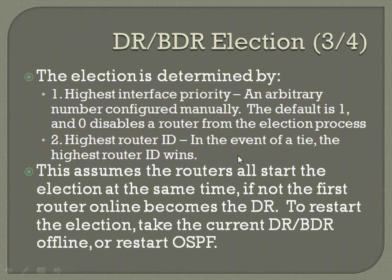This assumes that routers all start the election at the same time. If not, the first router online becomes the designated router. So if you turn on one and then wait 30 seconds and turn on all the others, you're not really going to have an election — it's just going to be the only one that was online when the election started. To restart the election, you can either take the current designated router and backup designated router offline, or you can restart OSPF and they'll have that election then.